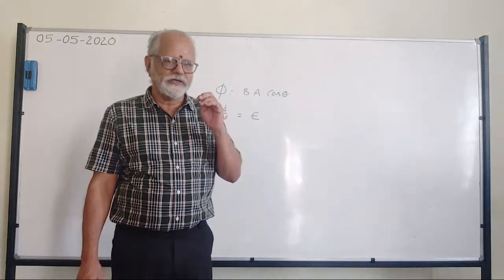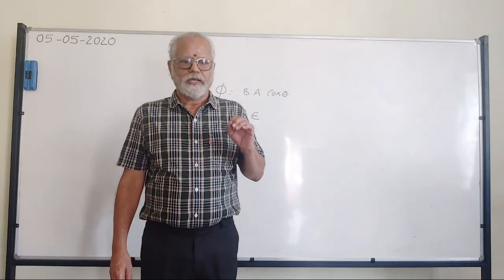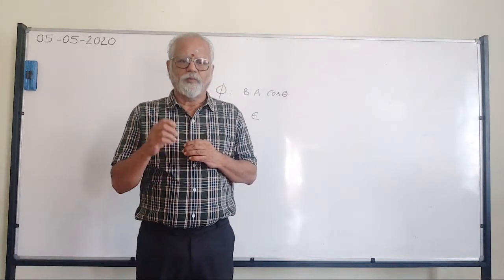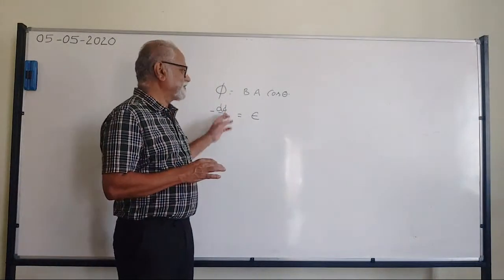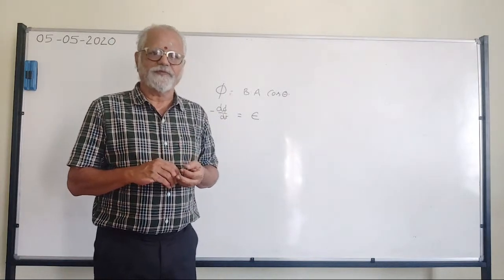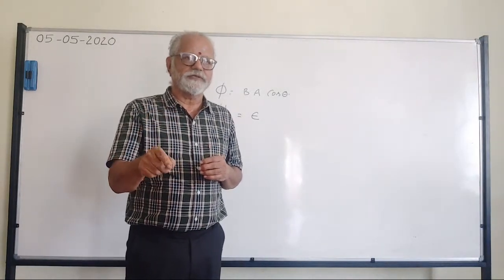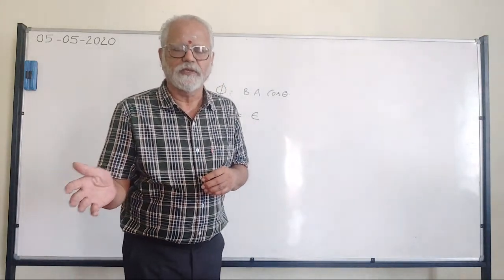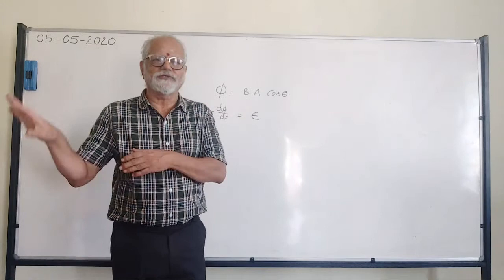The negative sign indicates a very important thing — which we will discuss when we learn Lenz's law. As long as the magnetic flux is changing, the induced EMF will be there — that is Faraday's first law. The moment the flux becomes constant, its derivative becomes zero, so the induced EMF becomes zero. This epsilon (ε) is the symbol for induced EMF. This chapter is electromagnetic induction; the next chapter is AC, but I am going to continue as one chapter since they share the same ideas.